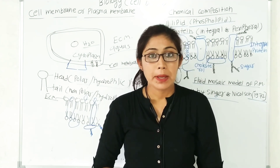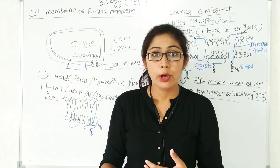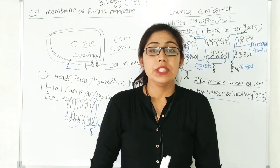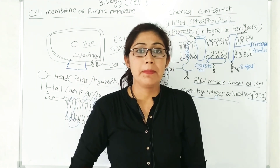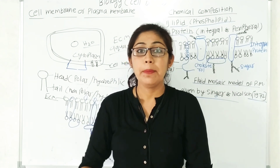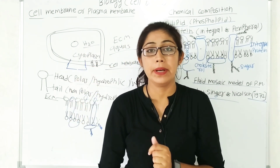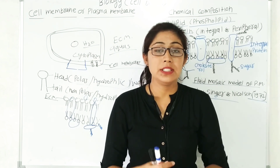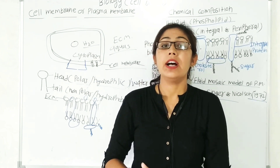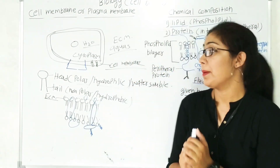There are many functions performed by the plasma membrane. The plasma membrane is selectively permeable in nature — it allows the transport of some molecules and blocks the transport of others. This function is known as the membrane transport system. We will study the transport function in our next video lecture. So this is all about the structure of the plasma membrane.